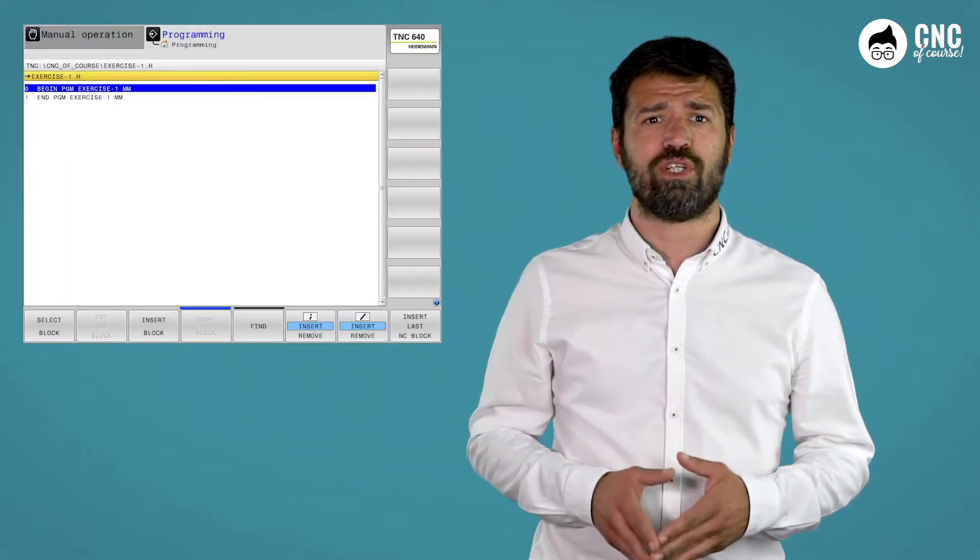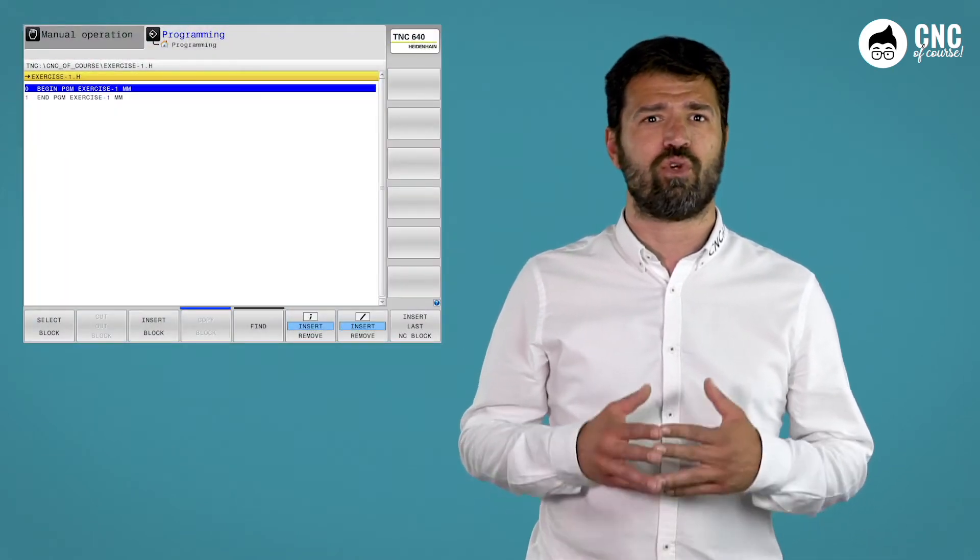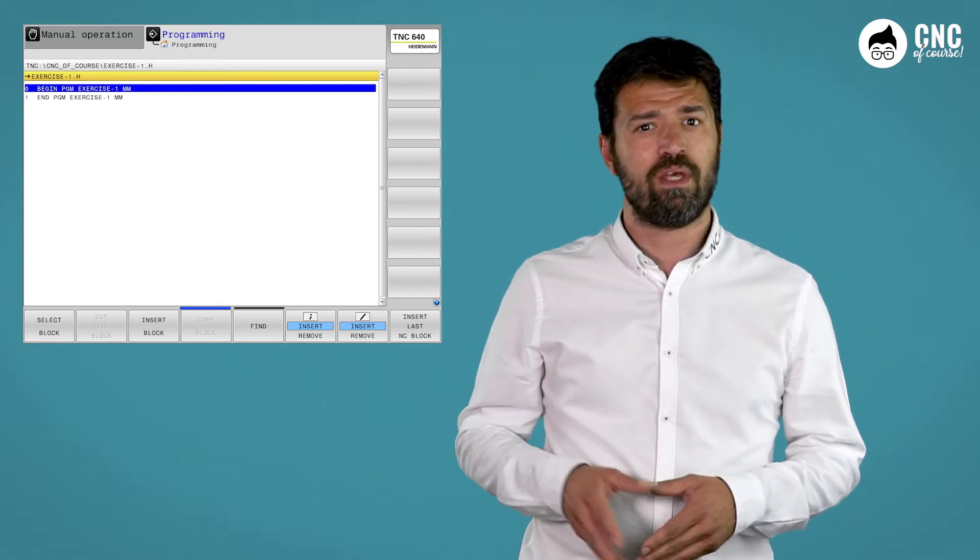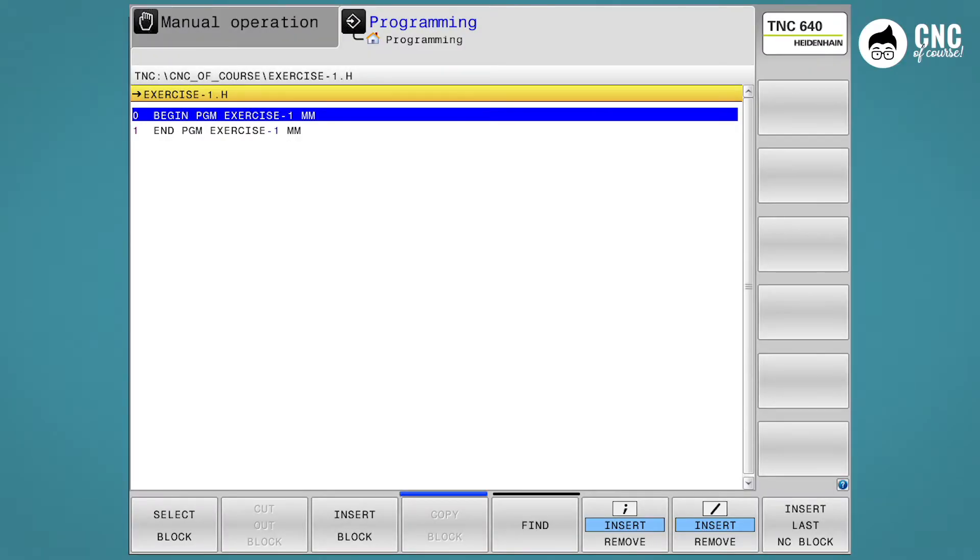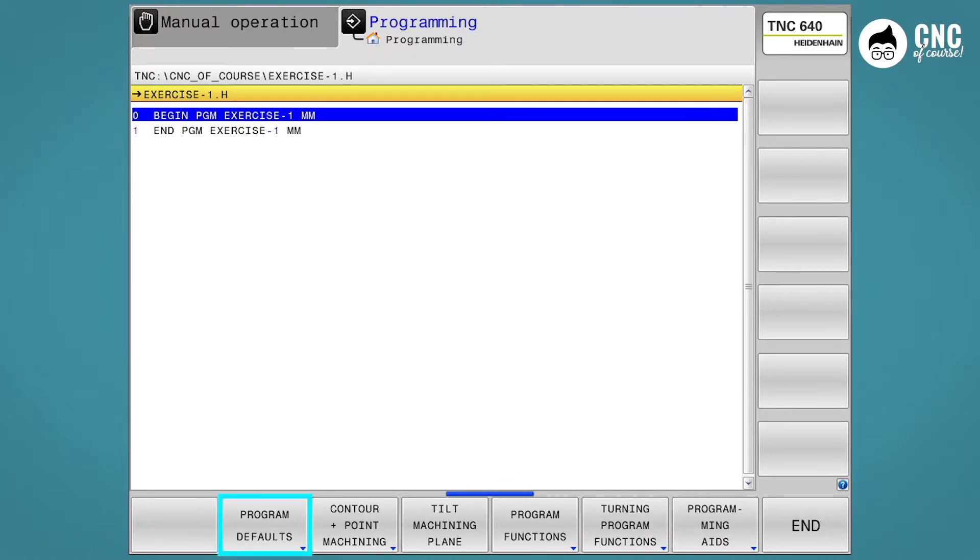In order to assign the right values, you must already establish your work offset. As we have seen in the previous lessons, when we start a new program, the control immediately gives us the possibility of defining our blank that we will then work on. If you have skipped this step, such as now that we are continuing with the program edited in the last lesson, you can set it again using the special function command, Spec FCT on the keyboard, followed by the program default soft key, and again, block form.